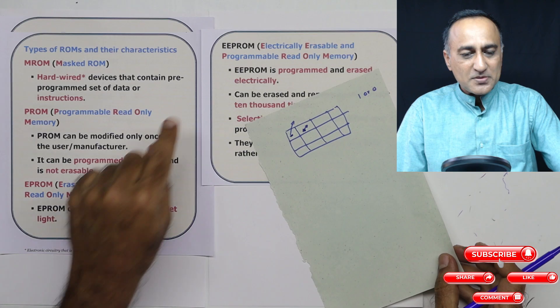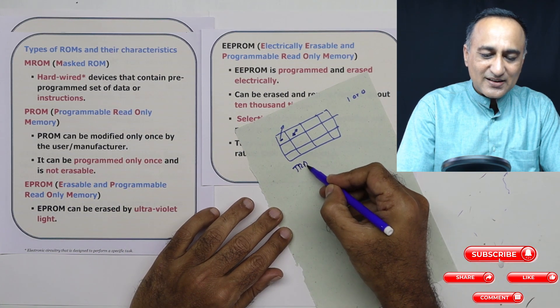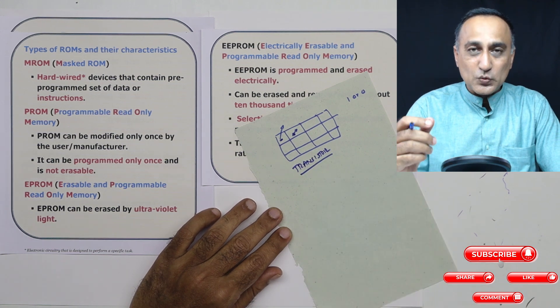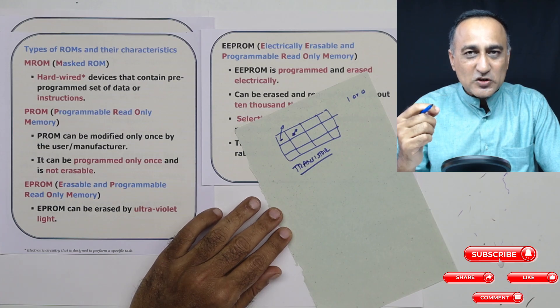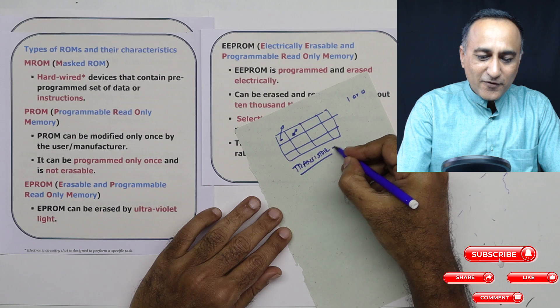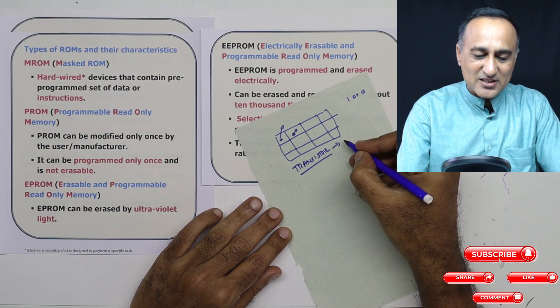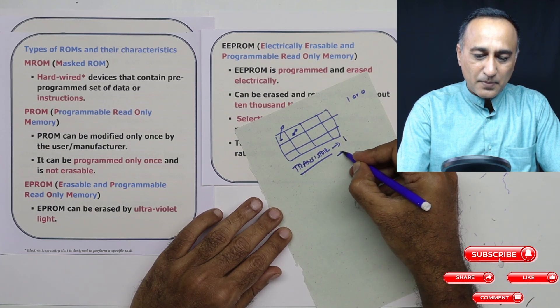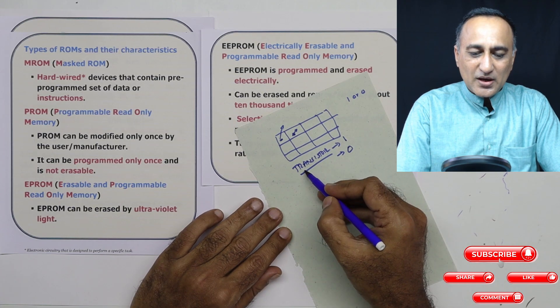Now if you look at EPROMs and EEPROMs, they don't use the fuse, they use transistors. Since a transistor is nothing but a switch, through electric signals and light I can make the switch on and off. So if I put, for example, an electrical signal or ultraviolet light on a transistor by switching on the current, I can make it one. By doing again a different current, I can make it zero. So this way what I can do is I can switch on and off the transistor multiple times.